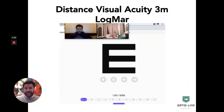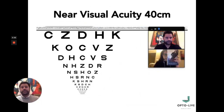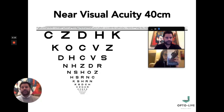The first test we perform is distance visual acuity, which is conducted at three meters. We ask the patient to measure the distance between their screen and where they are sitting — it must be three meters — and then we start testing. The results are recorded at the bottom of the screen. Near visual acuity is the second test. We can use a spoon or spatula as an occluder to cover individual eyes and assess visual acuity, which is again recorded inside Optolive.